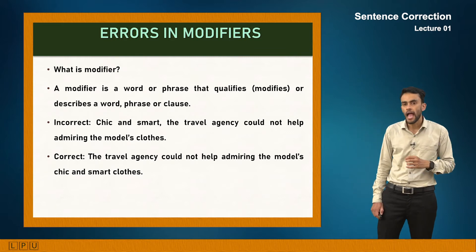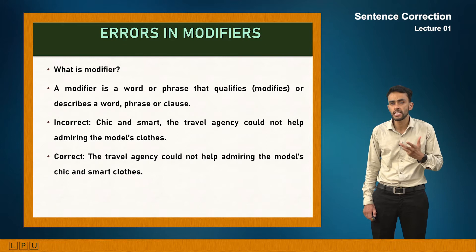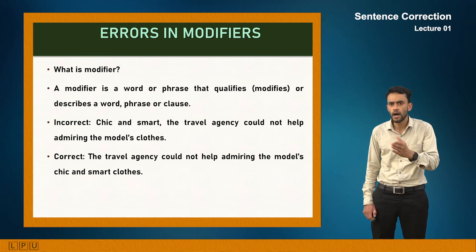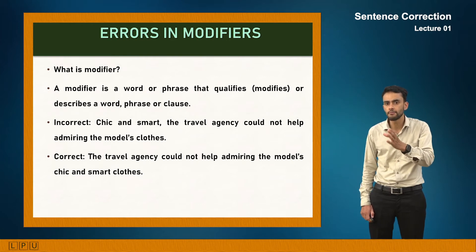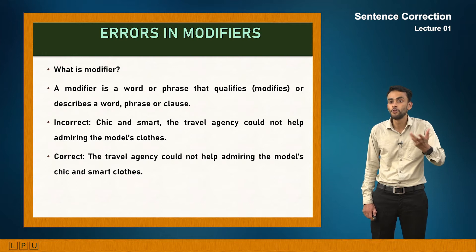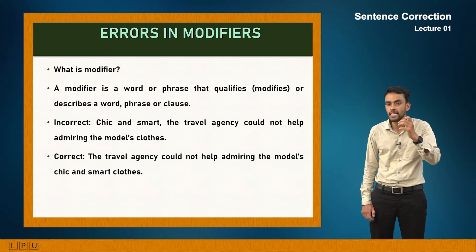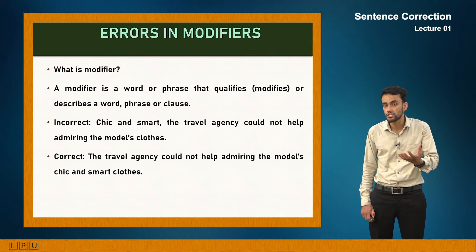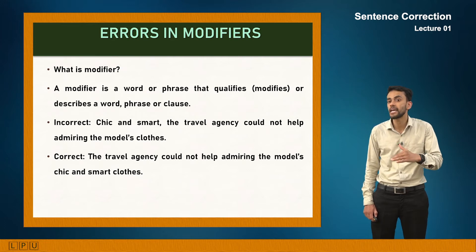The second type of error is errors in modifiers. A modifier is a word, phrase, or clause that modifies something in a sentence. For example: 'Chicken smart. The travel agency could not help admiring the model's clothes.' This is ambiguous. The correct sentence is: 'The travel agency could not help admiring the model's chicken smart clothes.' Here 'chicken smart' is an adjective acting as a modifier for the noun 'clothes'.